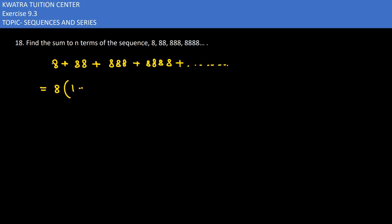Now what do we have to do? Take 8 common. First we have 1, second we have 11, third we have 111, fourth we have 1111, and up to how many terms? n terms.